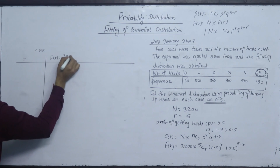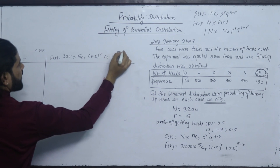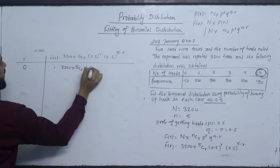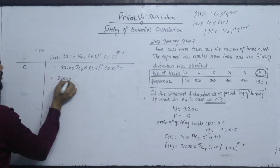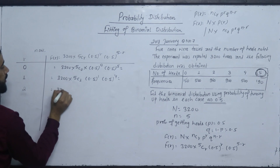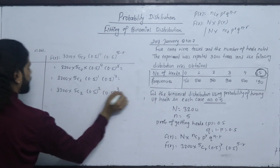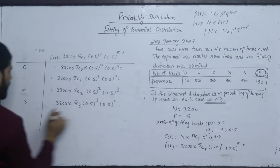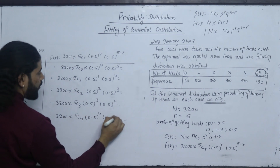F(R) equals 3200 into 5Cr into 0.5 to the power R into 0.5 to the power 5 minus R. For R equals 0: 3200 into 5C0 into 0.5 to the power 0 into 0.5 to the power 5. For R equals 1: 3200 into 5C1 into 0.5 to the power 1 into 0.5 to the power 4. For R equals 2: 3200 into 5C2 into 0.5 to the power 2 into 0.5 to the power 3.